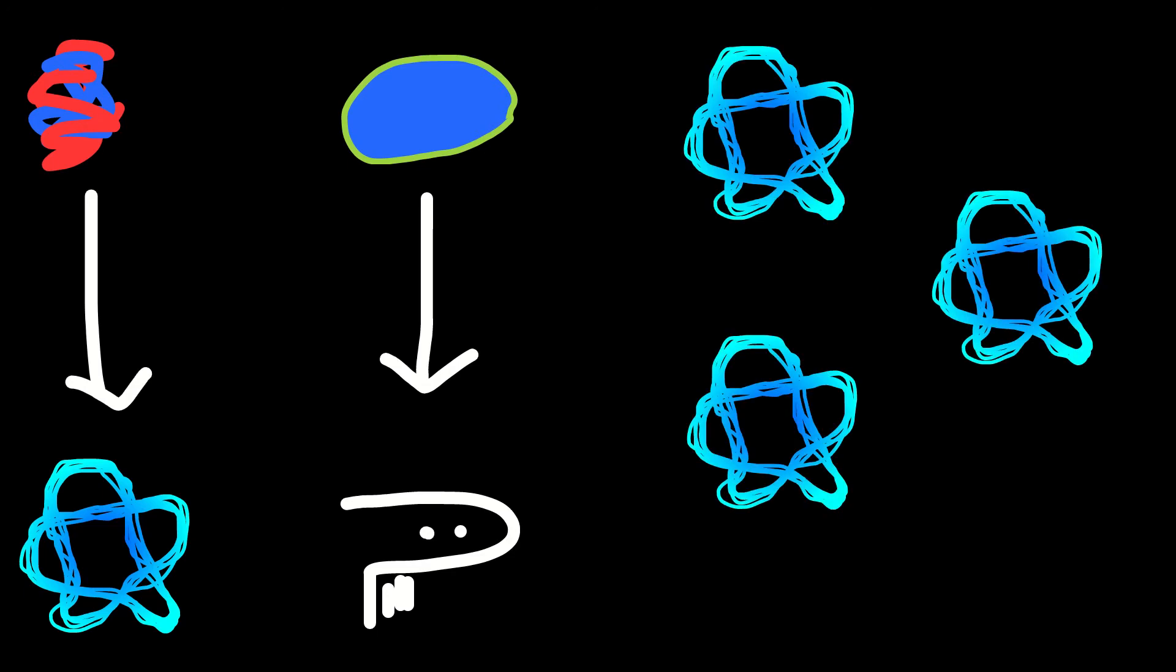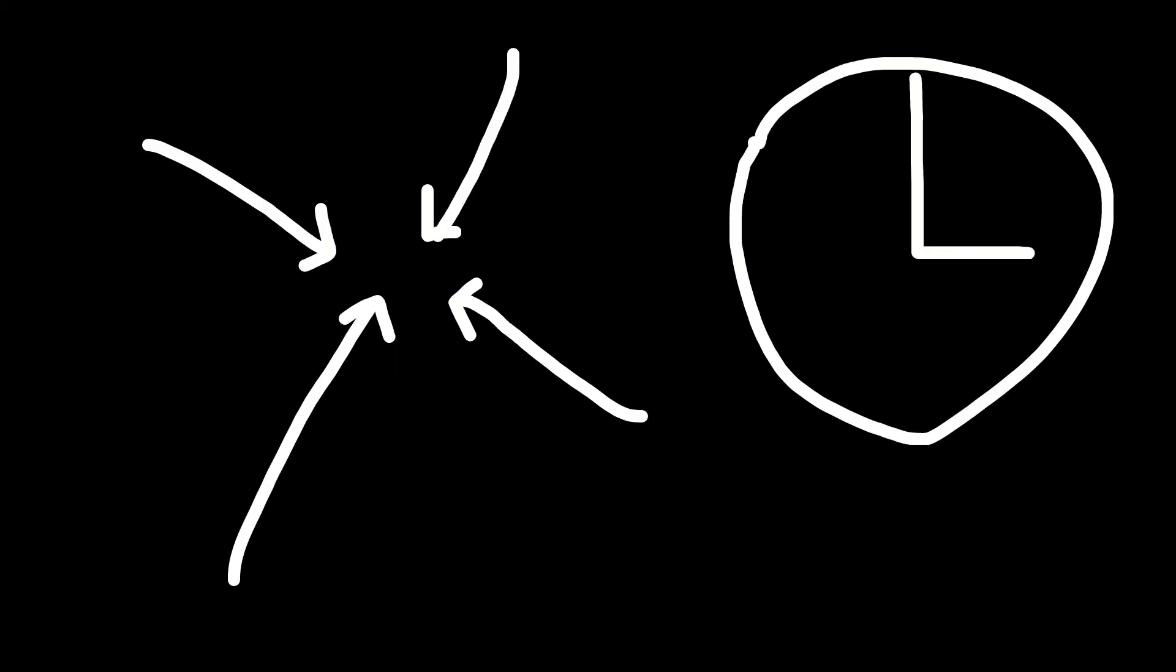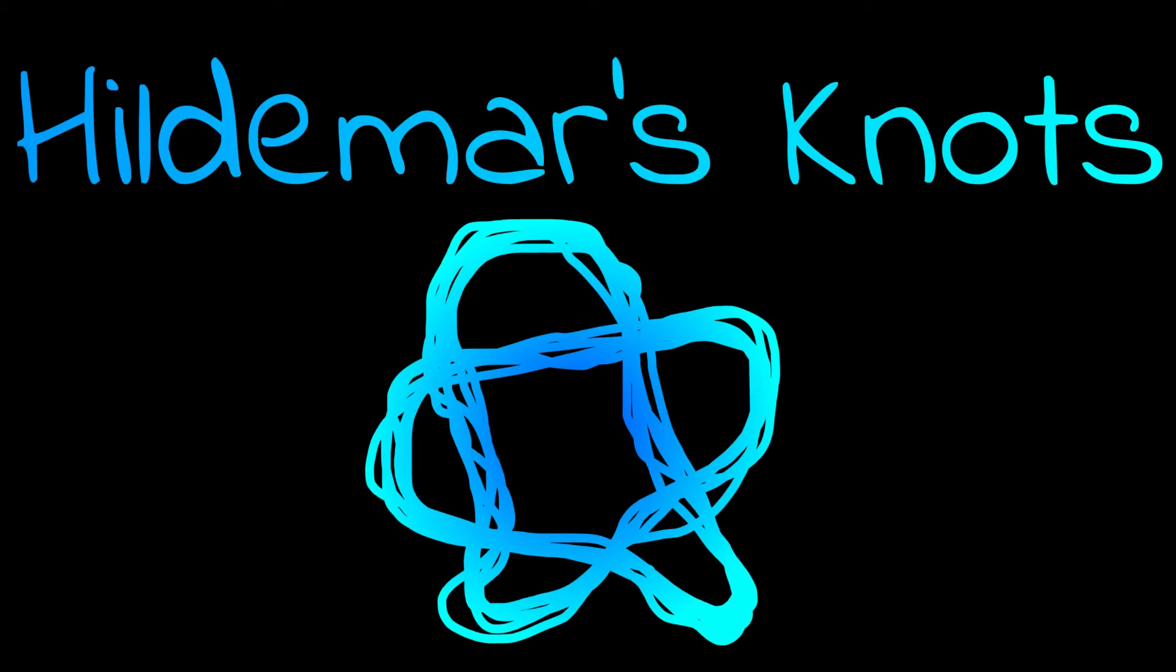There is a whole ecosystem based off of these knots and threads, which is around 50 times smaller and faster than the one found on Earth. One of the species found here is known as the Hildemars knots.